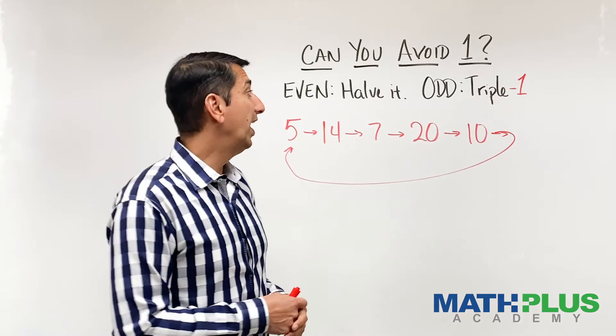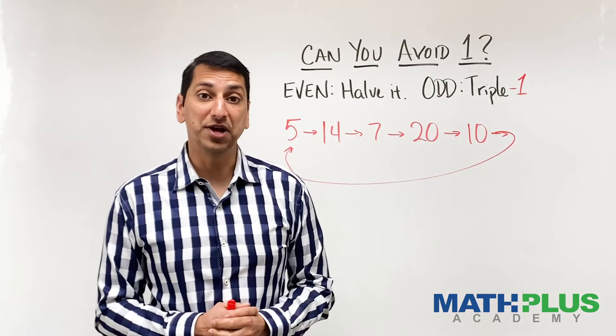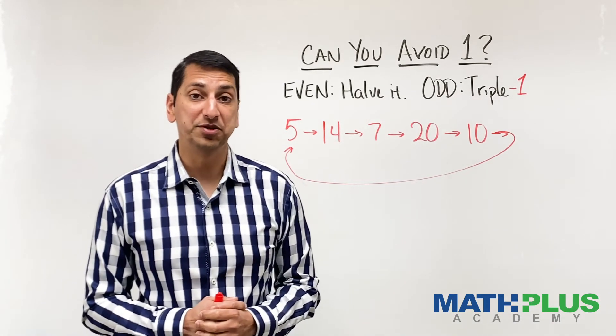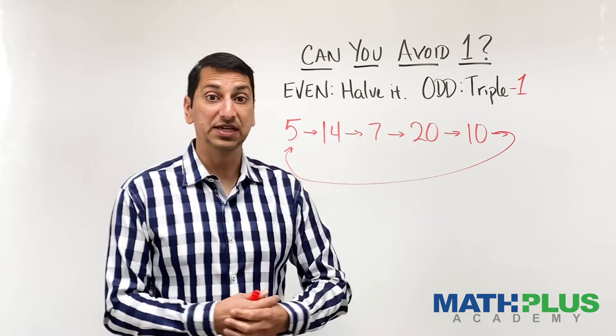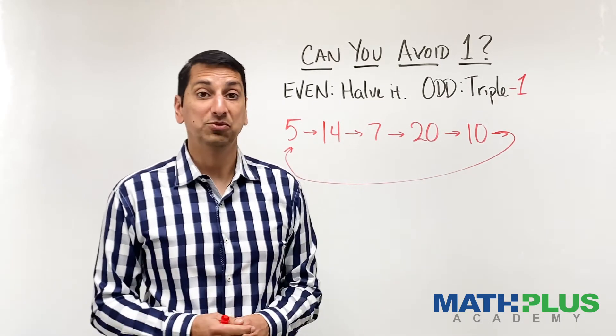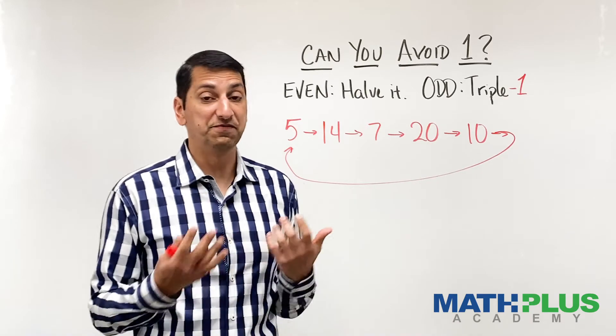So this is something, this little loop here is kind of interesting. It never hits one. And that happens when I do the subtracting one over there after I triple odd numbers. So you might look for something like this with the triple plus one rule that we started with, see if you can find something like that.